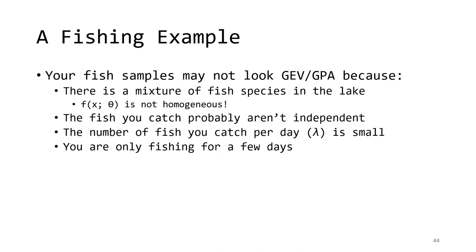You might also find that your fish samples aren't well modeled by the GEV or GPA distributions. This could be for a number of reasons. First, the parent population of all fish in the lake is probably a mixture — there are probably several species, each with their own distribution of lengths. Second, it's likely that the fish you catch aren't independent: you probably go to the parts of the lake with the best chances, which may have some species more than others, and sometimes you manage to catch the same fish twice. You may also only catch a few fish each day, so the convergence in distribution hasn't quite happened yet, and your samples look more like the parent distribution than the GEV or GPA distributions.